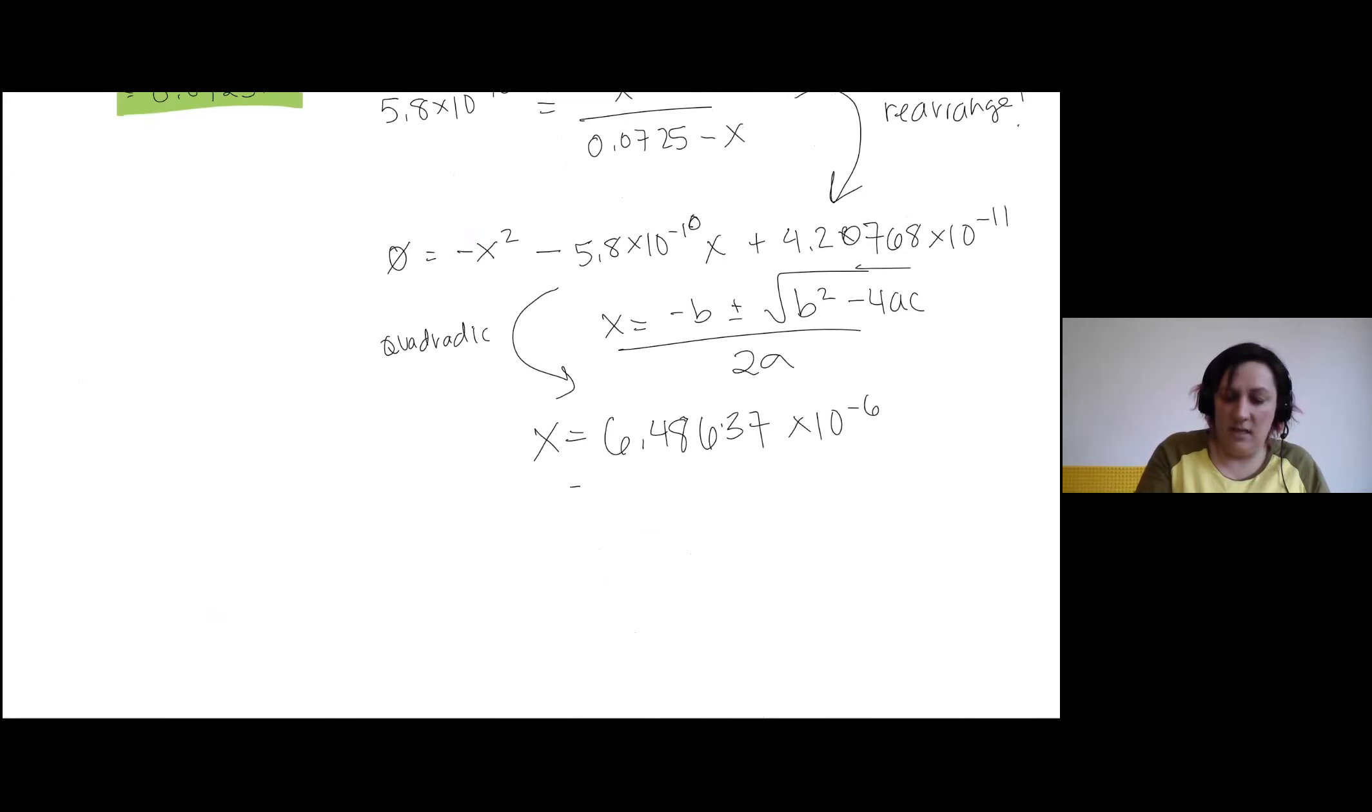And so this is going to be equal to H3O+. Our pH is going to be equal to the negative log of H3O+. So this will be equal to the negative log of 6.48637 times 10 to the negative 6. Plugging that into our calculator, we get a pH equal to 5.19.